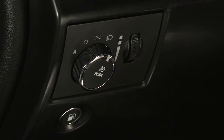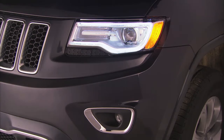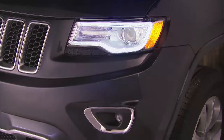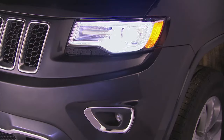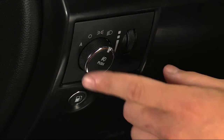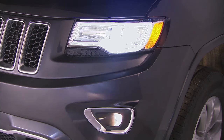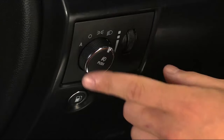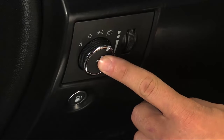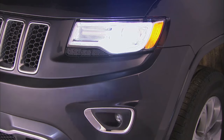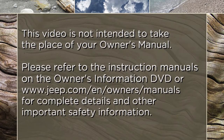To activate the front fog lights, turn on the parking lights or the low-beam headlights and push in the headlight switch control. Pressing the headlight switch control a second time will turn the fog lights off.